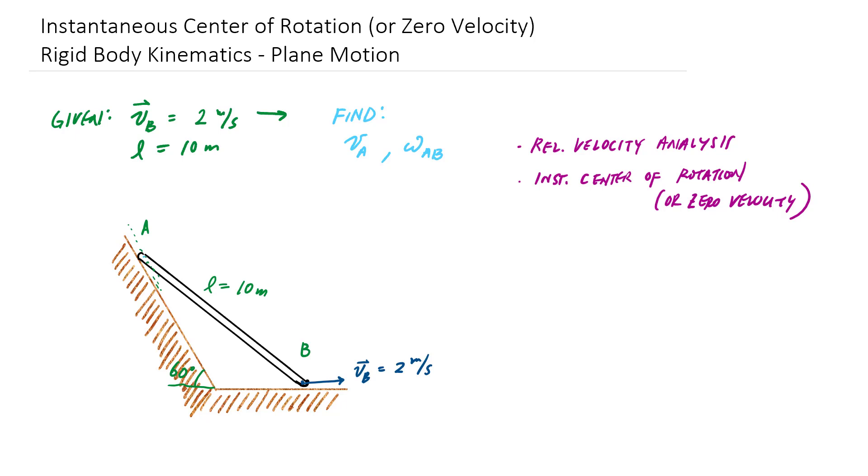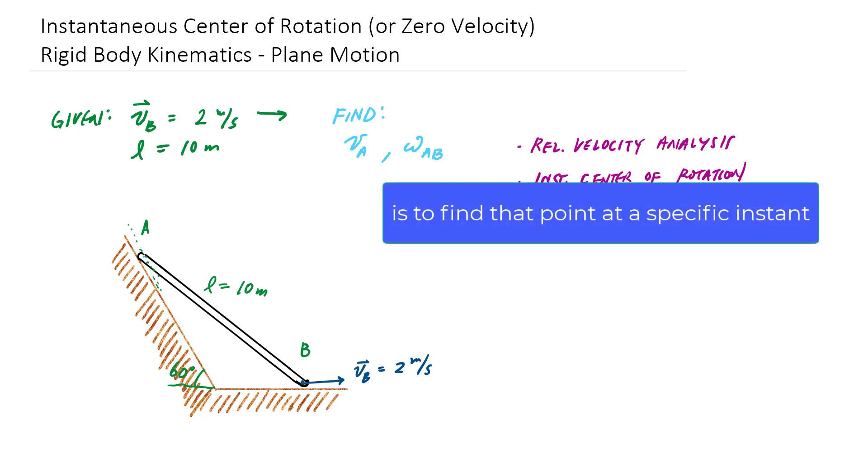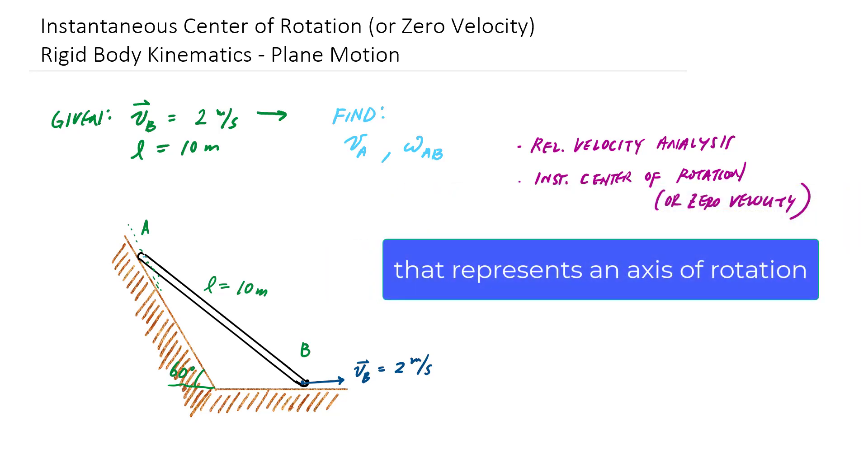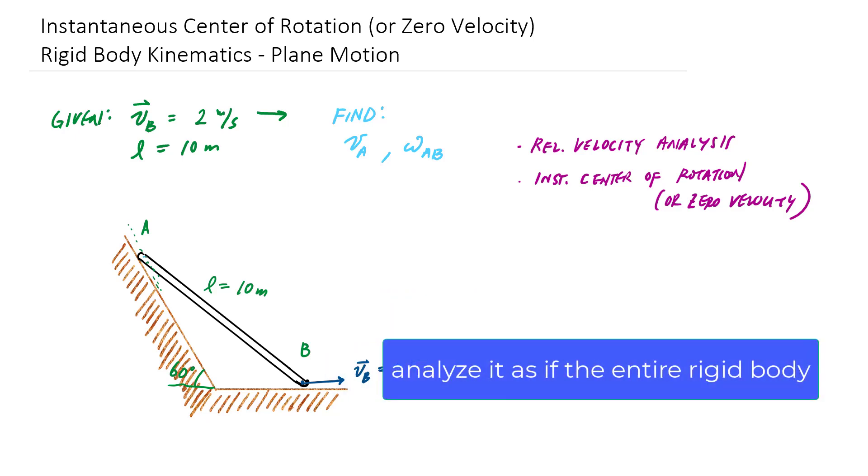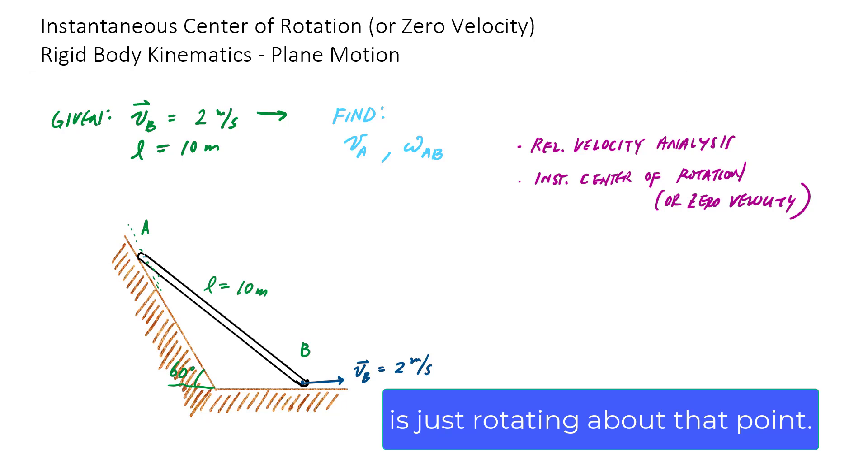And really, the idea of the instantaneous center of rotation is to find that point at a specific instant that represents essentially an axis of rotation for the entire rigid body. And you can analyze it as if the entire rigid body is just rotating about that point.